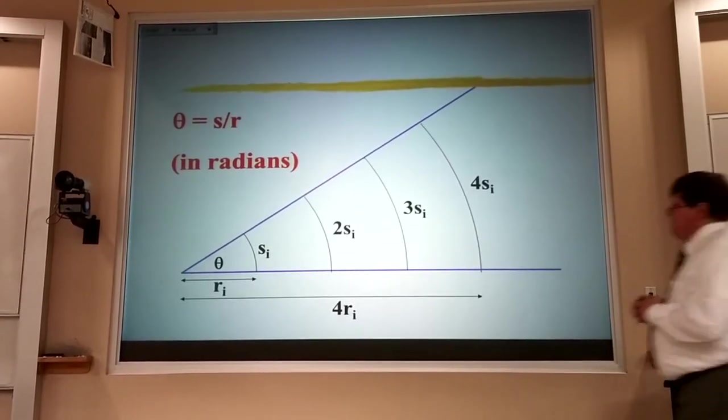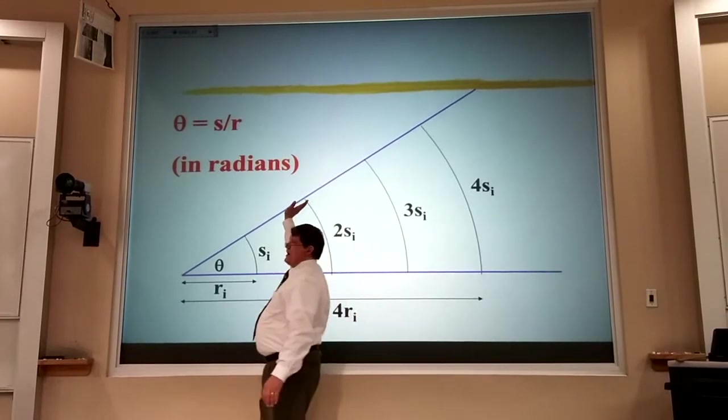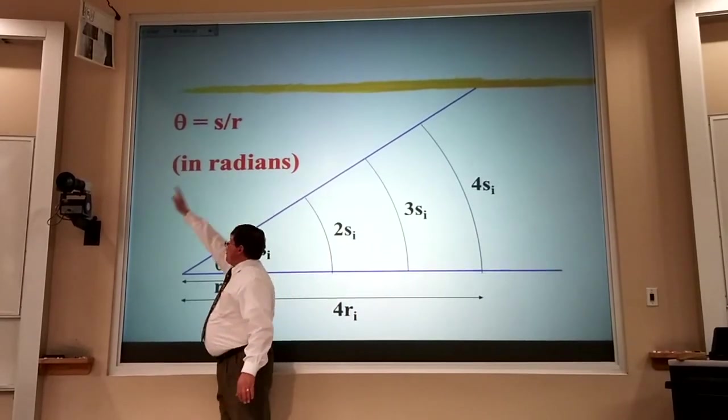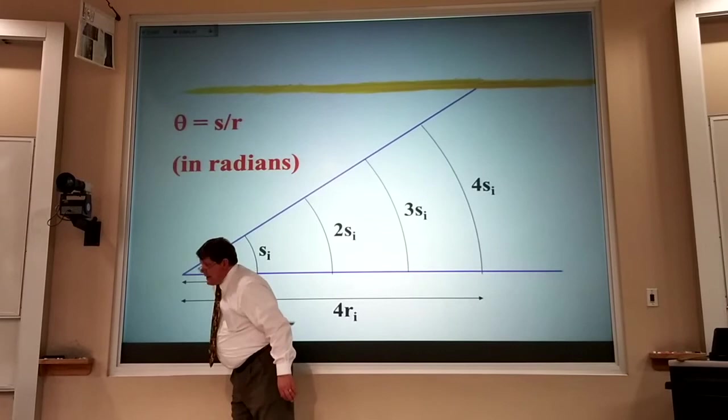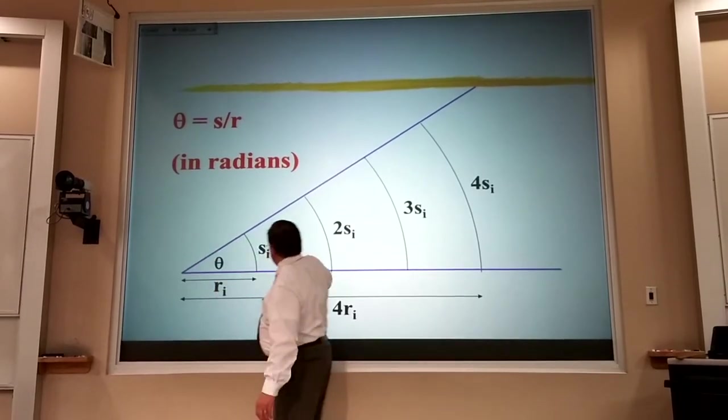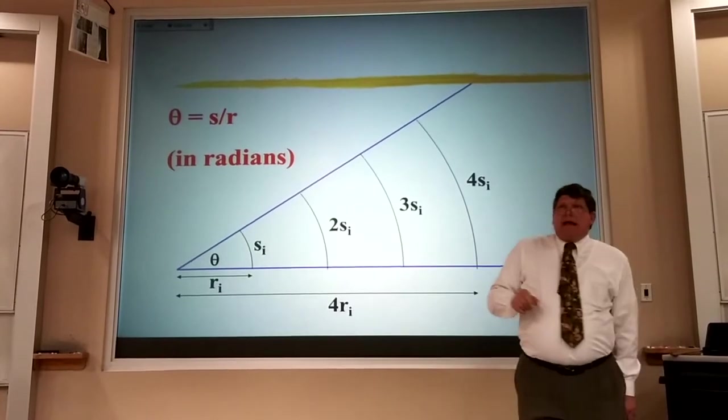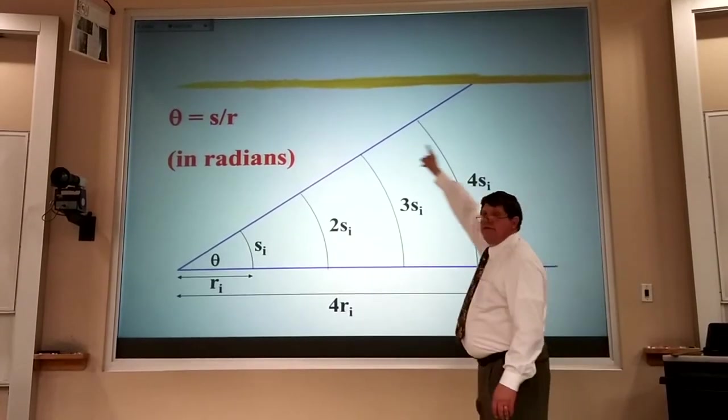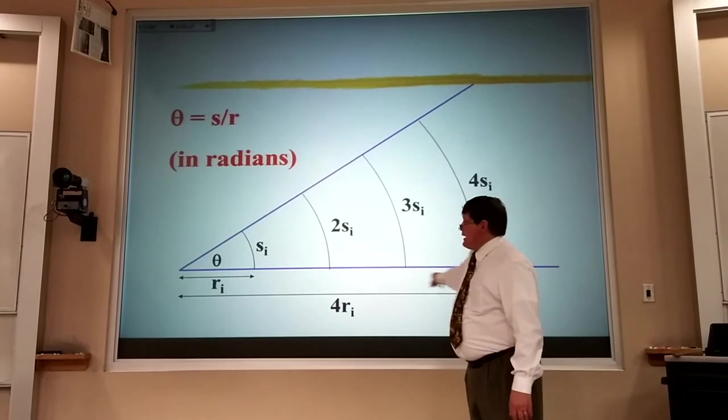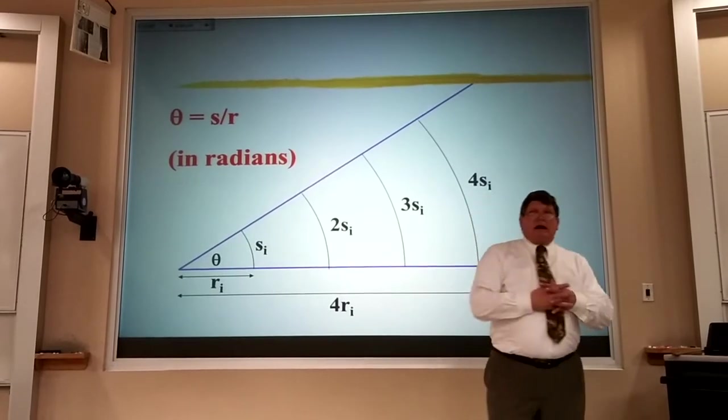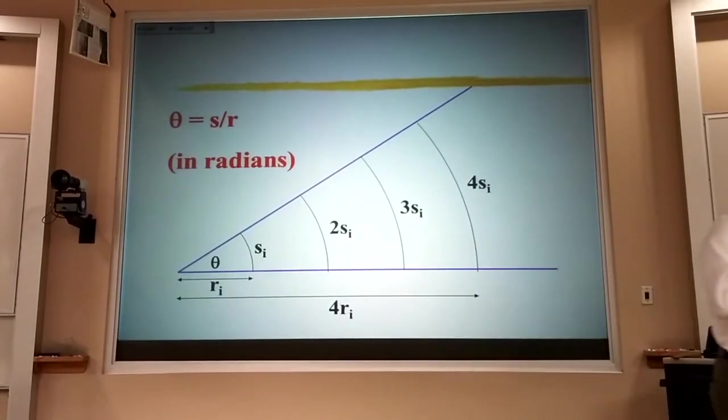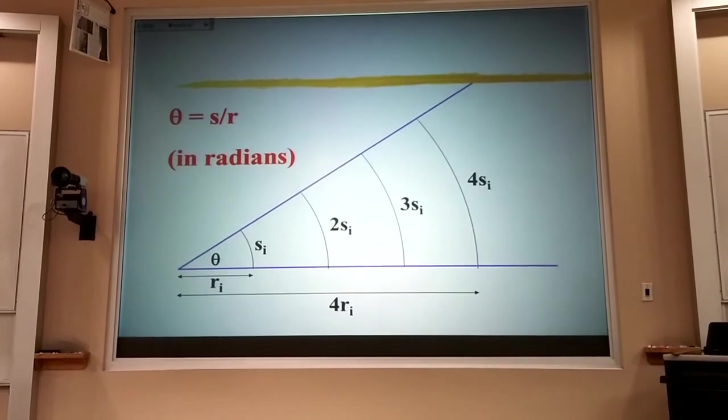Now, think what you're going to get if this line is rotated all the way around and back up, so where it's parallel with that line. In that case, the arc length is going to be 2πr, and when I divide it by r, I'll get 2π radians. 2π radians.